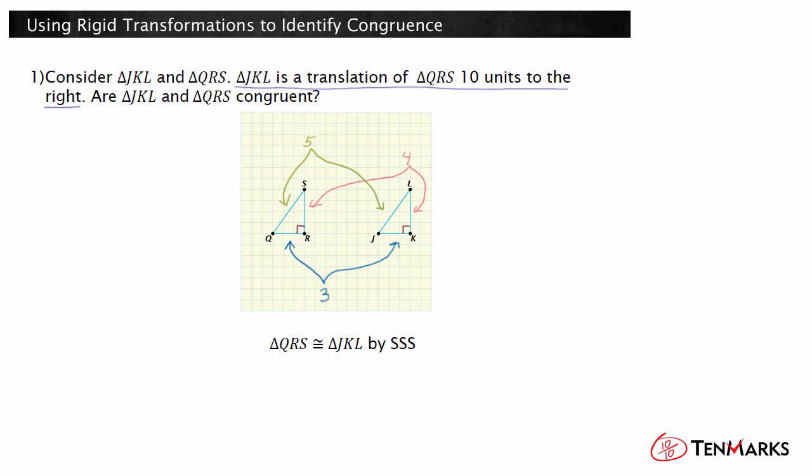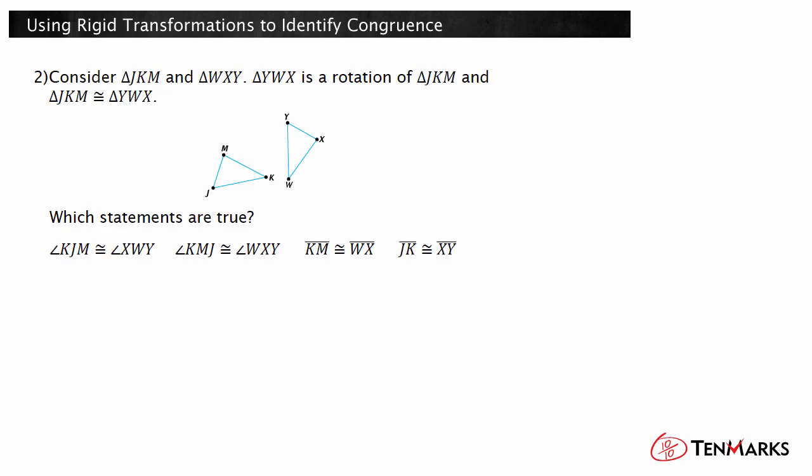Let's look at a situation where we already know that the triangles are congruent. Consider triangle JKM and triangle WXY. Triangle YWX is a rotation of triangle JKM and triangle JKM is congruent to triangle YWX. Which statements are true?